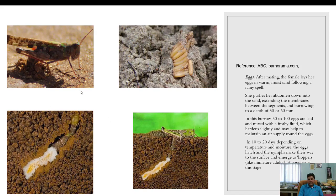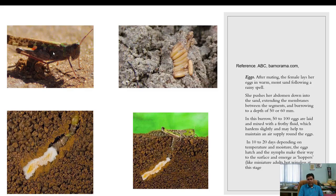After mating, the female lays her eggs in warm, moist sand following a rainy spell. The female pushes her abdomen down into the sand to a depth of 50 to 60 millimeters. Generally, 50 to 100 eggs are laid and mixed with a frothy secretion that covers the egg pod.